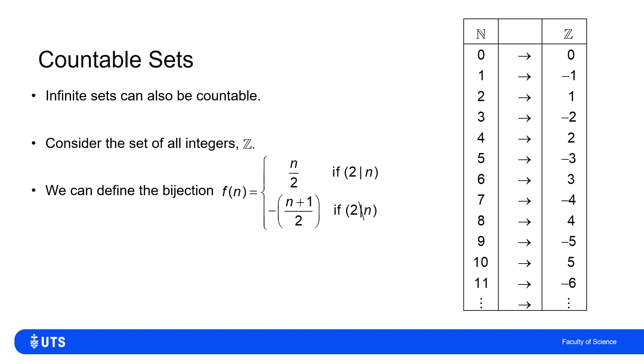So you can see as I map 0, 1, 2, 3, 4, 5, 6, 7, I'll get 0, -1, 1, -2, 2, -3, 3, and so on.